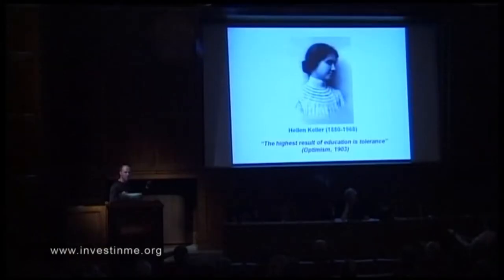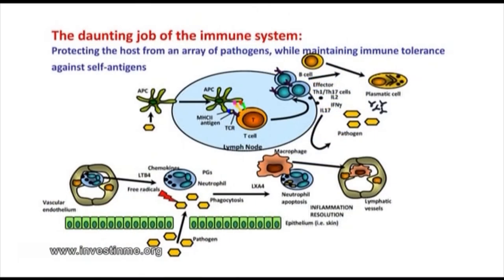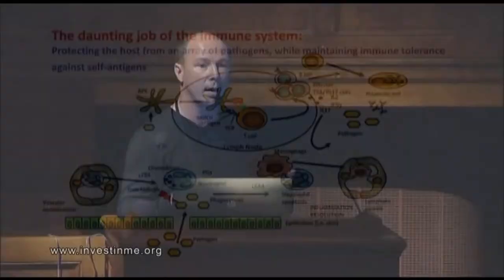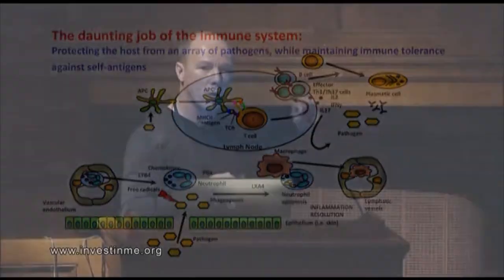From an immunological point of view, it's even more important for our survival. As you probably know, the immune system has the job to protect against a wide array of pathogens, but at the same time, the immune system has to keep tolerance against our own tissue. And this is not easy because the immune system is perfectly designed to localize, neutralize, and eliminate antigens and pathogens.